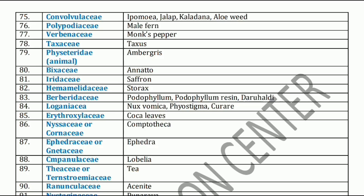Next, Physeteridae family. Physeteridae family includes Ambergris. Next, Bixaceae family. Bixaceae family has Annatto. Next, Iridaceae family. Iridaceae family — Saffron is used as a coloring agent. Next, Hamamelidaceae family. Hamamelidaceae family has Storax.